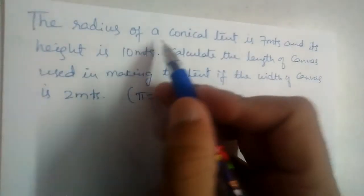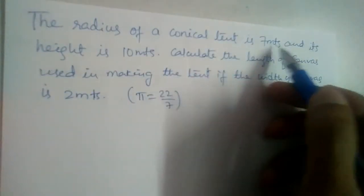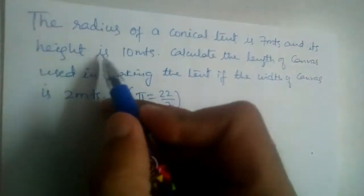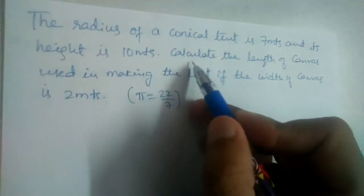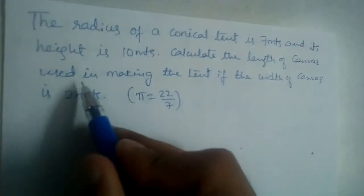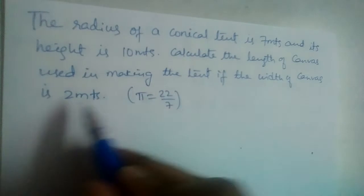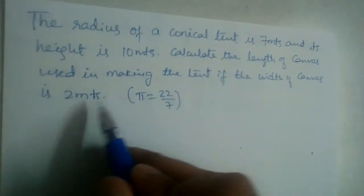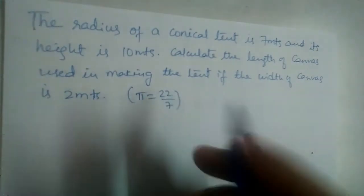The radius of a conical tent is 7 meters and its height is 10 meters. Calculate the length of canvas used in making the tent if the width of the canvas is 2 meters. Take pi as 22 by 7.